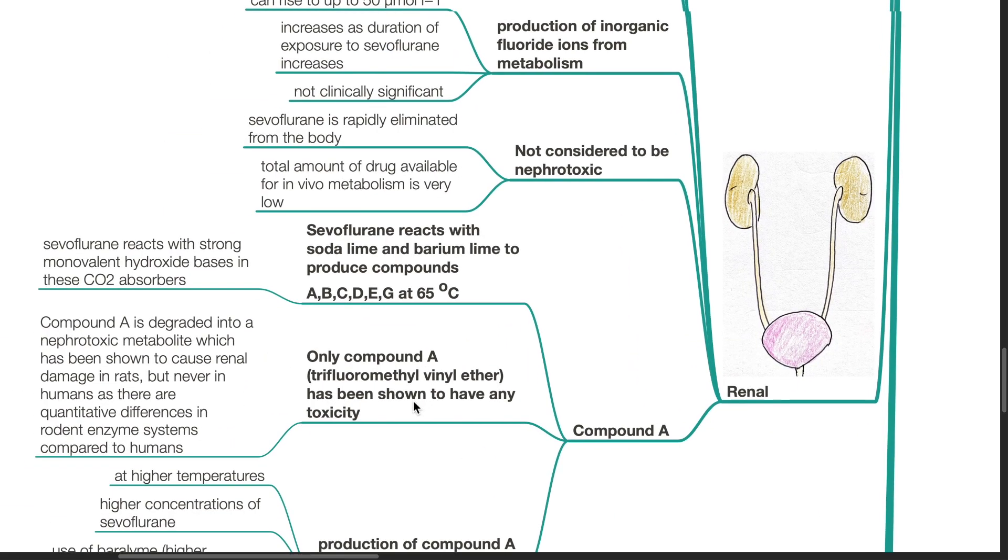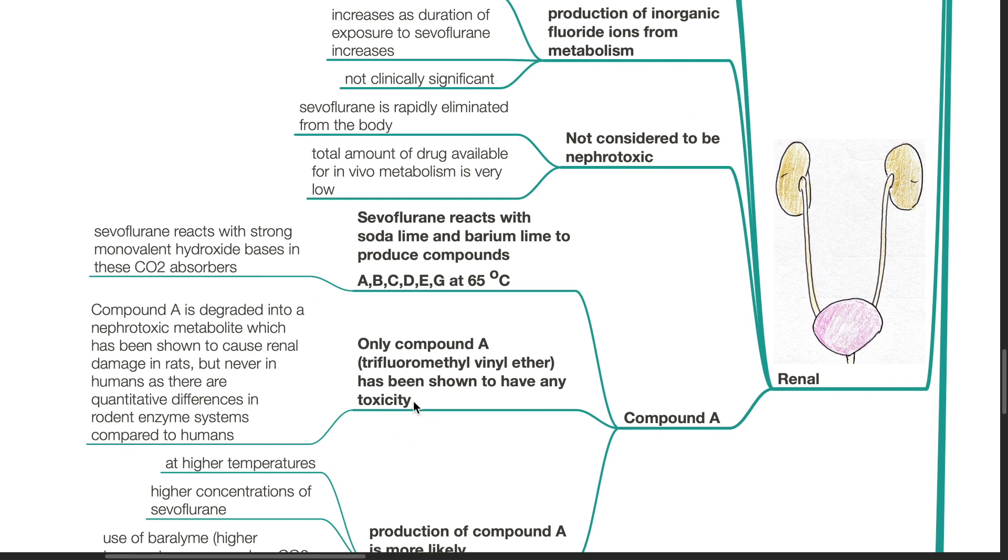Compound A. Sevoflurane reacts with soda lime and barium lime to produce compounds A, B, C, D, E, and G at 65 degrees Celsius. Sevoflurane reacts with strong monovalent hydroxide bases in these carbon dioxide absorbers. Only compound A has been shown to have any toxicity.